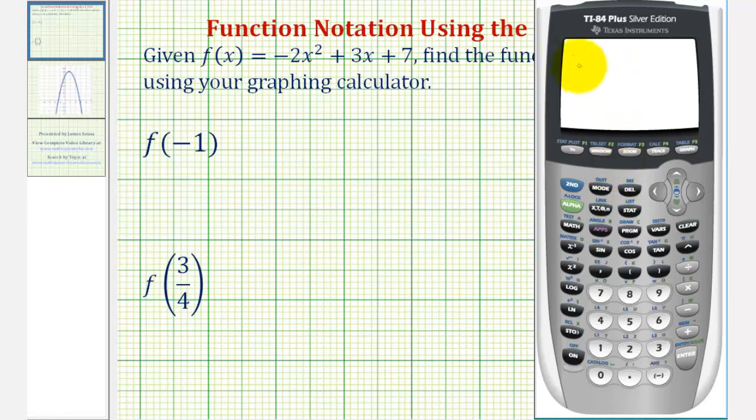Now we want to enter the variable y1. Press vars, right arrow once to yvars, enter. Since y1 is already selected, press enter again. Now in parentheses, enter negative 1: open parentheses, negative 1, close parentheses, enter.